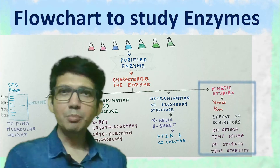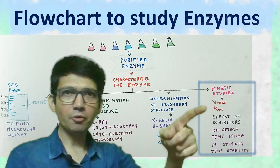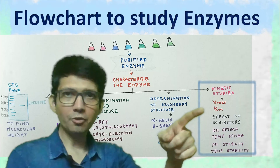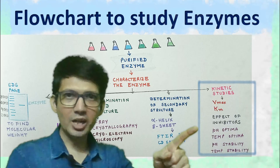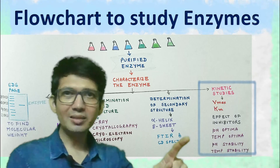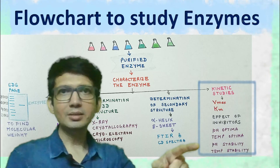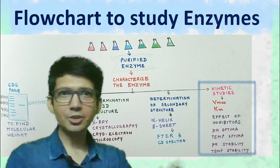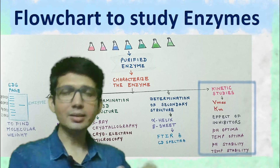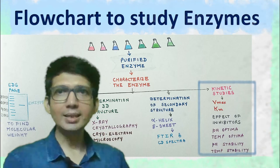The most important parameters such as determination of Vmax, determination of KM, effect of inhibitors, pH optima, temperature optima, and stability to pH and temperature — all these assays can be performed using the purified enzyme.